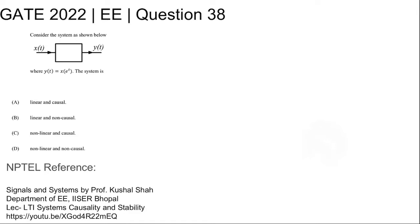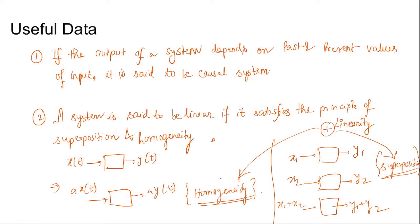For NPTEL reference, you can refer to the lecture LTI Systems Causality and Stability of the NPTEL course Signals and Systems by Professor Kushal Shah, Department of Electrical Engineering, IISER Bhopal. If the output of the system depends on the past and present values of input, then the system is said to be a causal system.